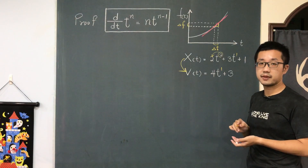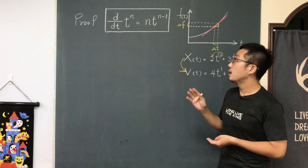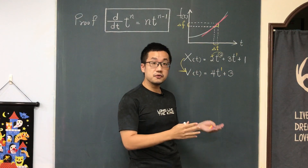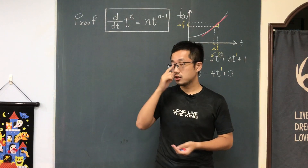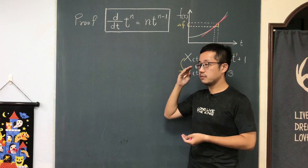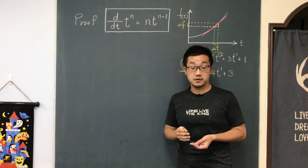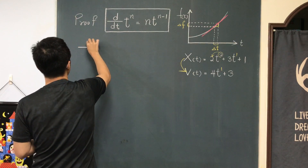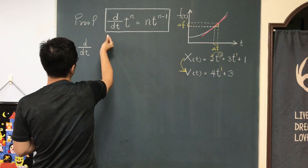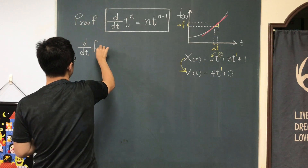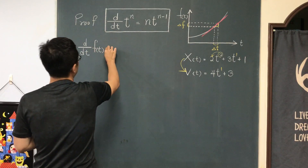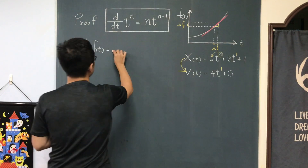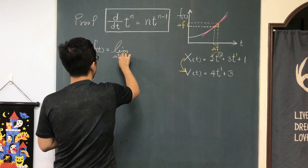Today I want to show you how to do the proof of the derivative of a general form. Why should we take the derivative like this? Is there any mathematical proof? Yes, there is. In order to do this, we need to first remind ourselves of the definition of the derivative. The definition of d/dt of some function f(t) is defined by taking the limit as delta t approaches 0.